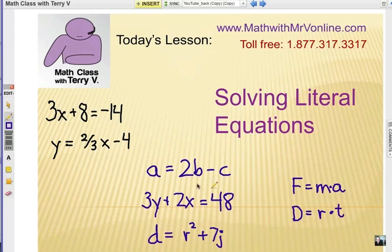How about 3y plus 2x equals 48? I can solve it as a literal equation and figure out what x actually is. It's a formula for finding x. D equals r squared plus 7j. Well, maybe we want to know how to rewrite it in terms of r. Over here on the right I have examples of formulas found usually in science classes.